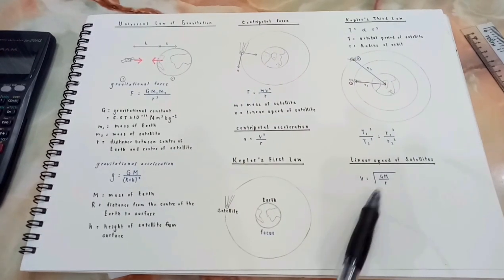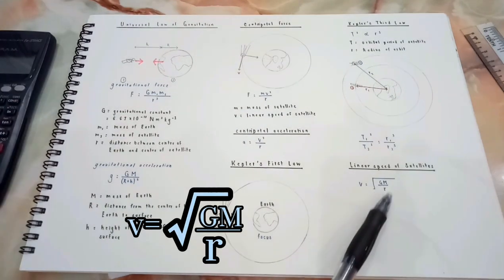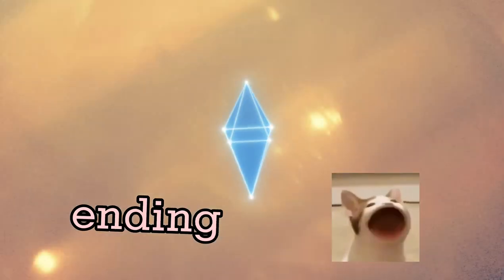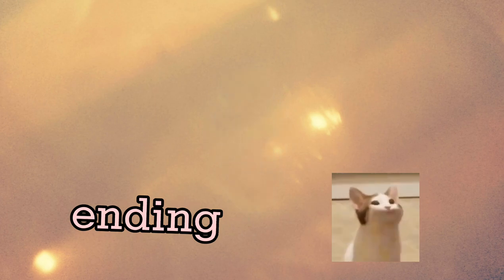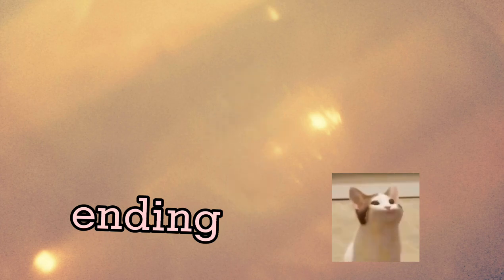Besides, linear speed of satellites can be calculated using V equals square root of Gm over R. So, there I have it, my documentary about my model of orbiting satellites around the Earth. Thank you for watching and bye!